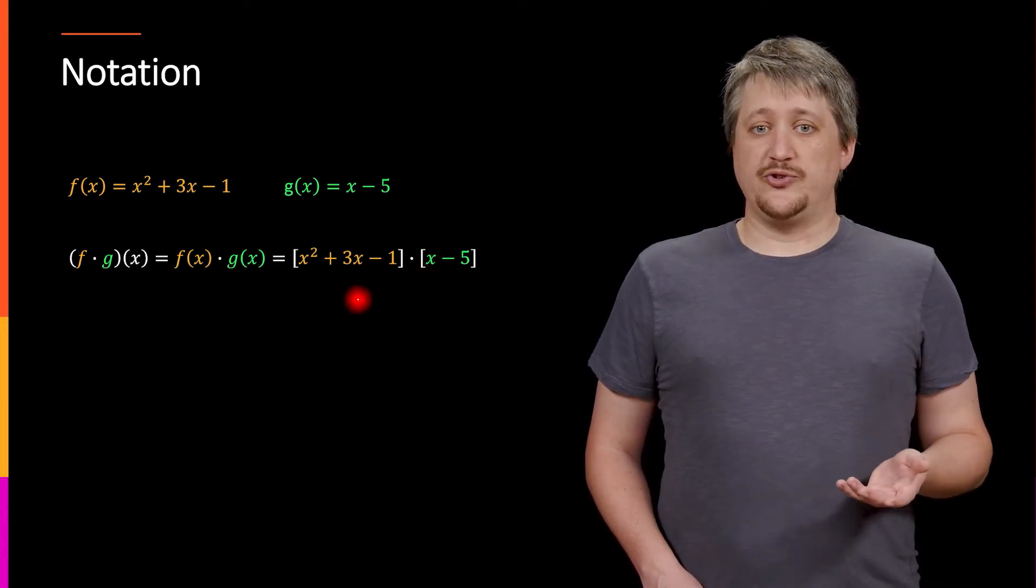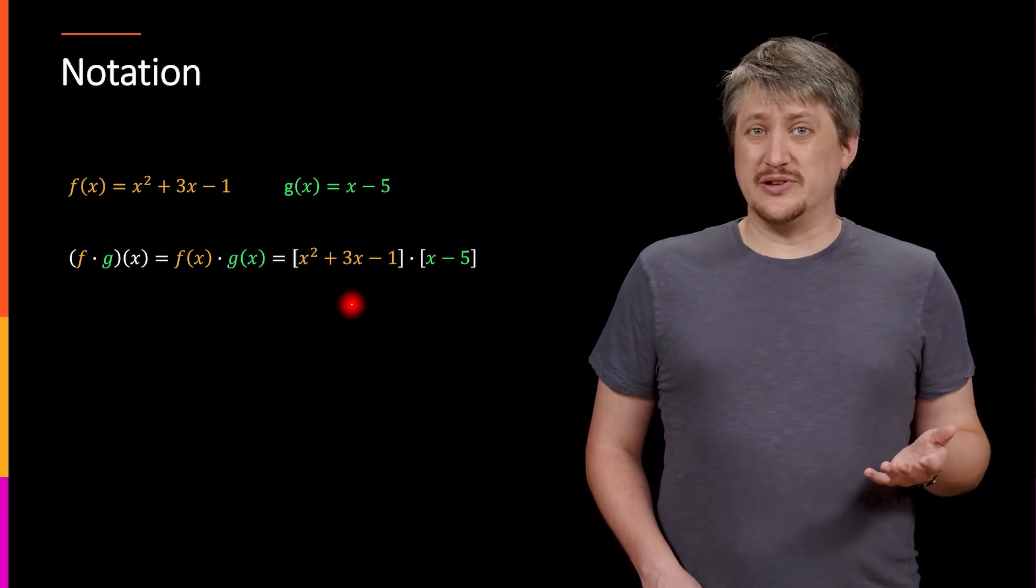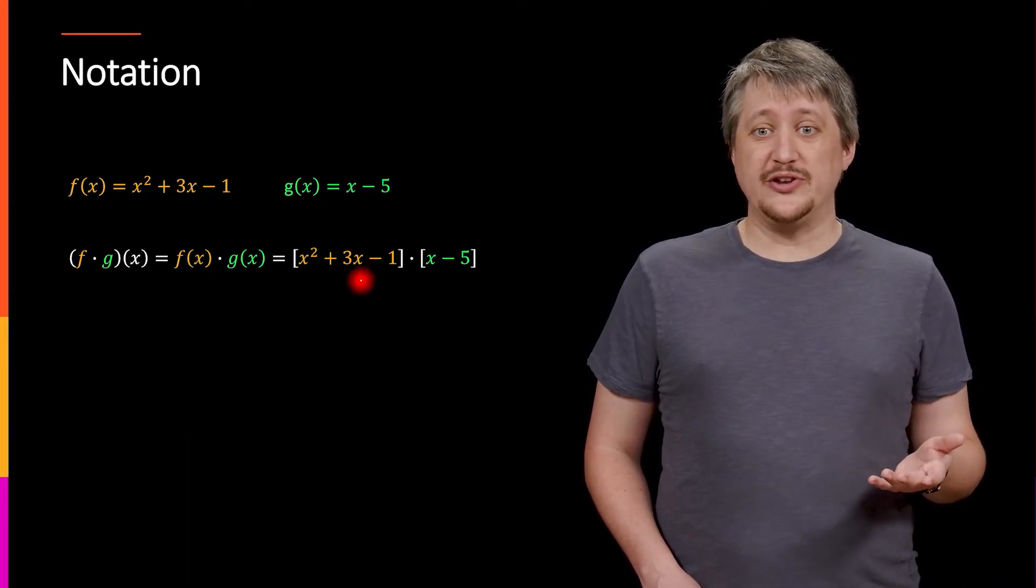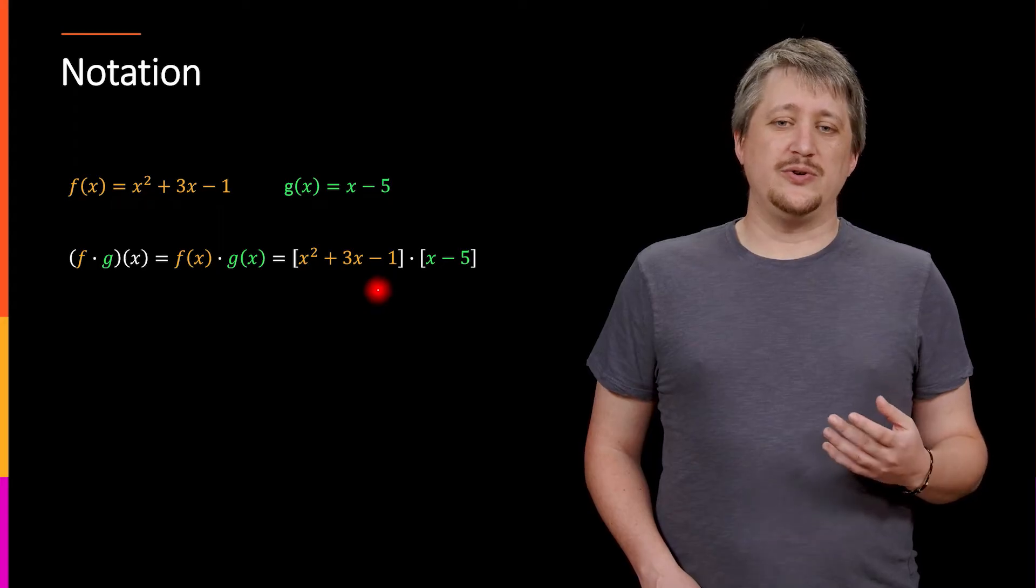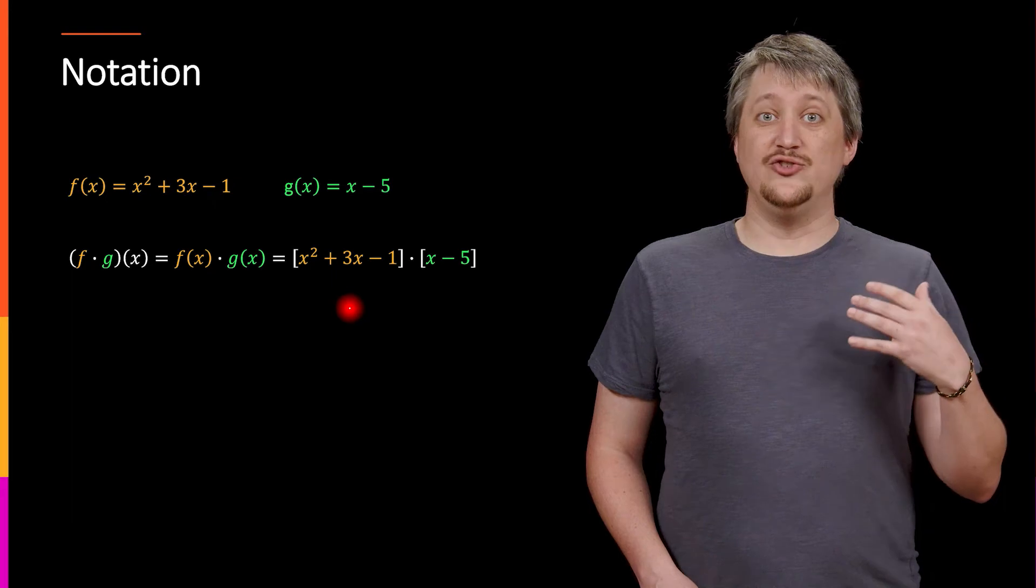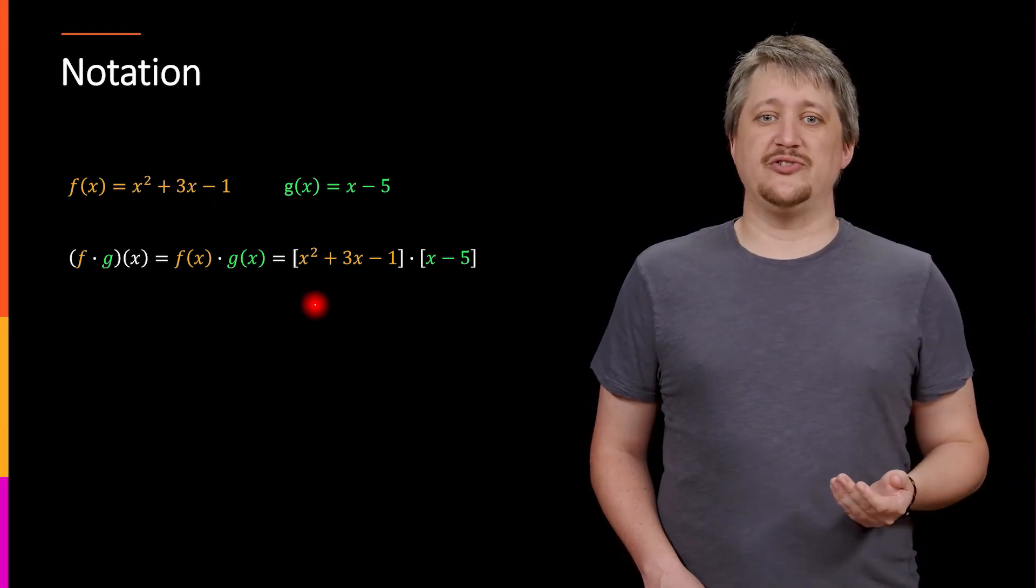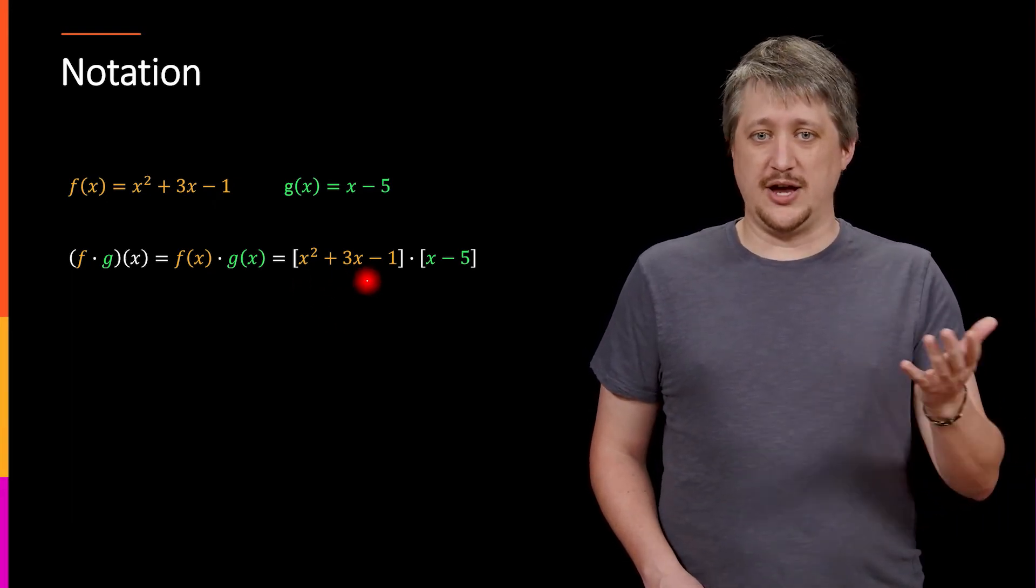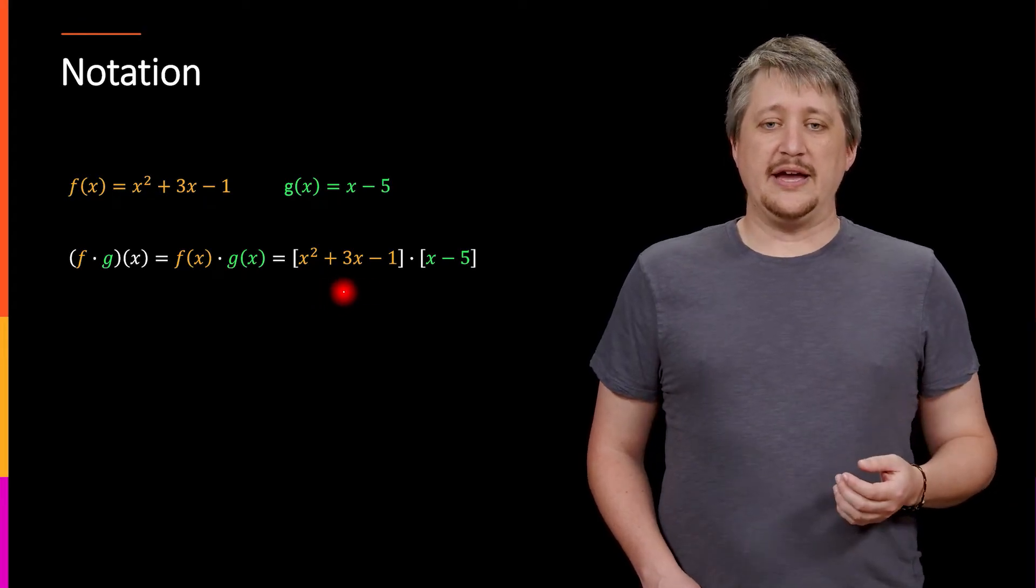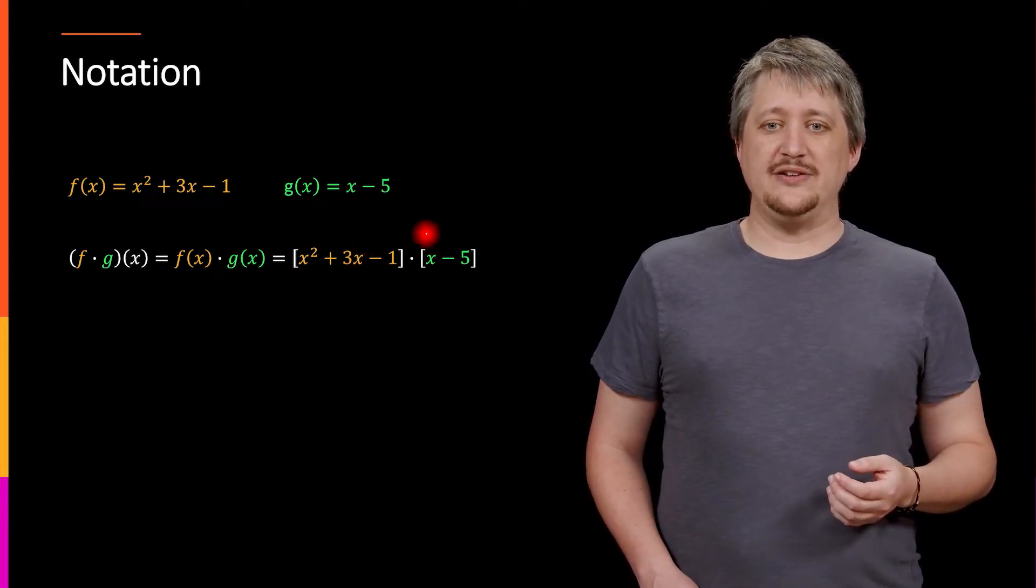Here I need to do distribution. If you're used to doing something like FOIL, it turns out that's not necessarily going to work here because one of these is three terms versus two. So a nicer approach is to use this general distribution technique, which is where you take one of these, I'm going to choose this first one, but you could use either one, and you distribute it to each individual piece.